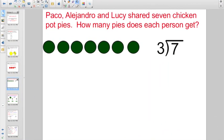The reason why they want you to be able to write quotients as mixed numbers is sometimes there's some quotient answers that don't really lend themselves to a remainder. Take a look at this one. Paco, Alejandro, and Lucy shared seven chicken pot pies. How many pot pies does each person get?